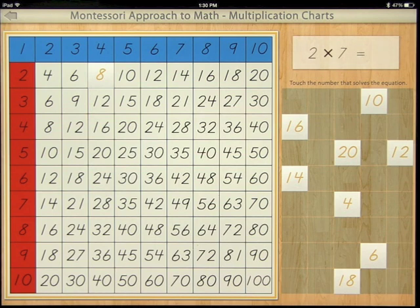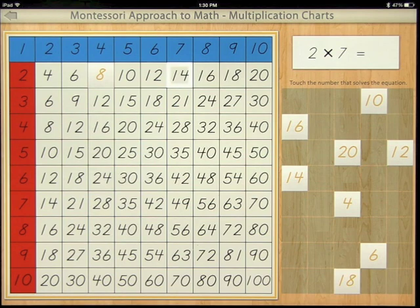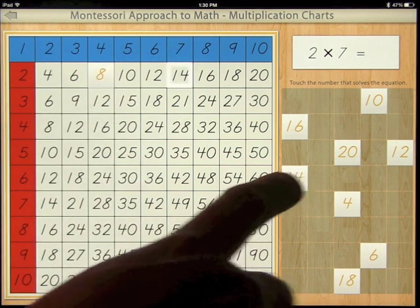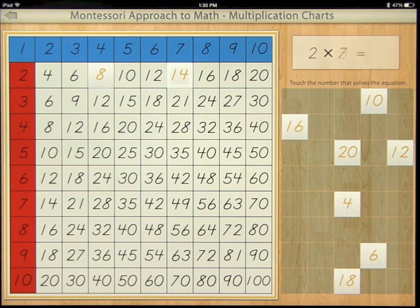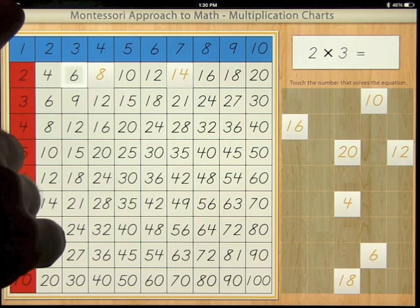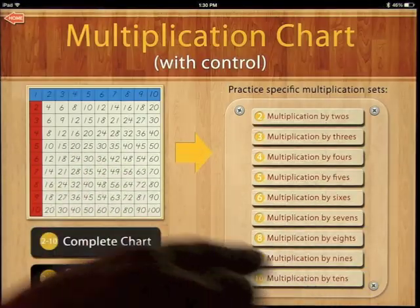You see that the squares come on and they guide you to the correct answer. 2 times 7 equals 14. 2 times 3 equals, and you can continue to go through that. You can choose anyone you want there.